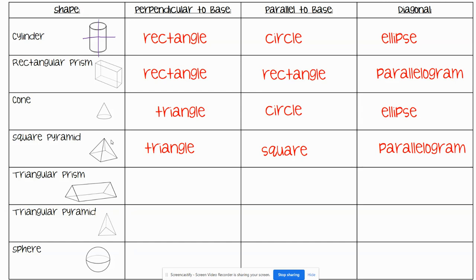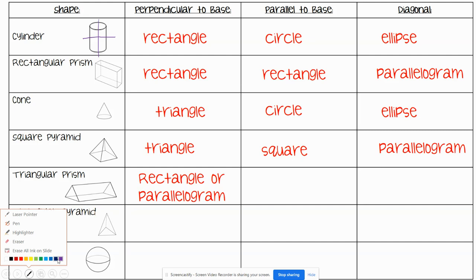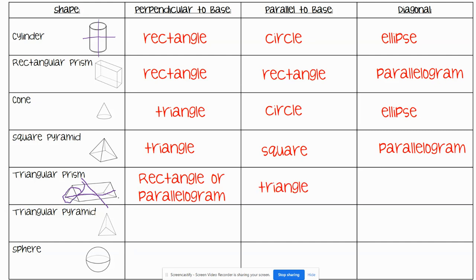For a triangular prism, if you cut it perpendicular to its base, you are going to get a rectangle or a parallelogram. This can be confusing, but remember that when you're cutting perpendicular to its base, you're cutting through the base. The base is the triangle, so you're cutting through it this way, meaning you're looking at these sides, which are rectangles or parallelograms. Parallel to the base would be this way, so you're looking at the base, which is a triangle. Diagonally would be another triangle, just a little bit elongated.